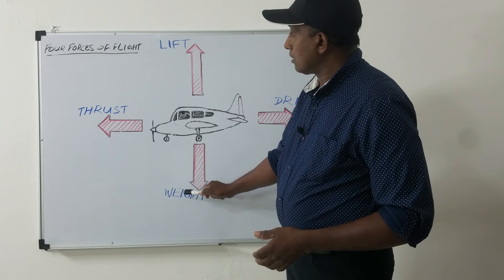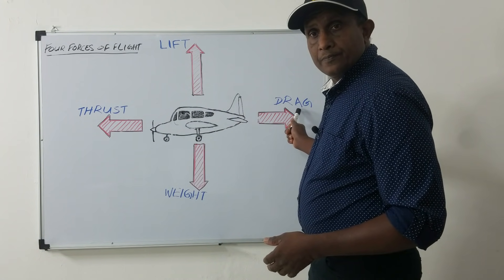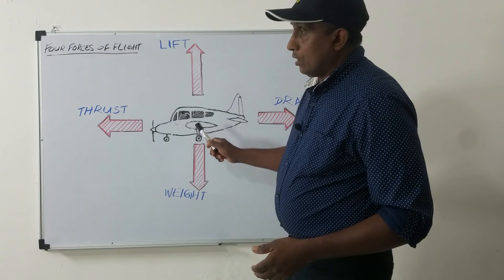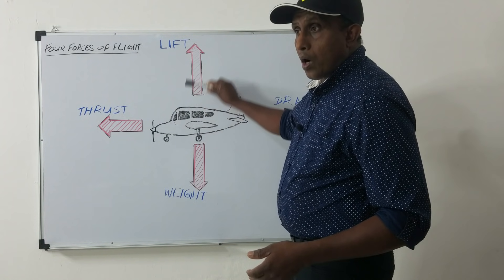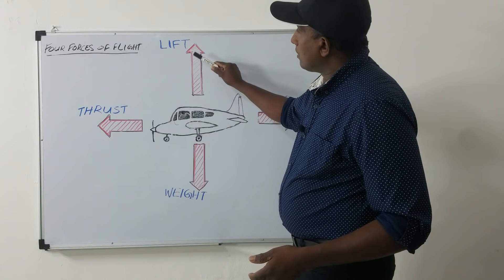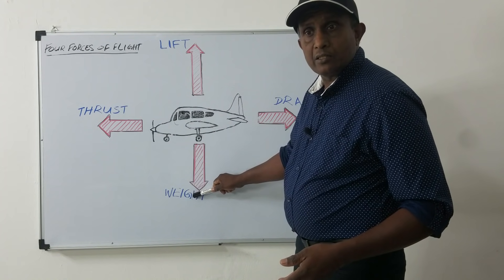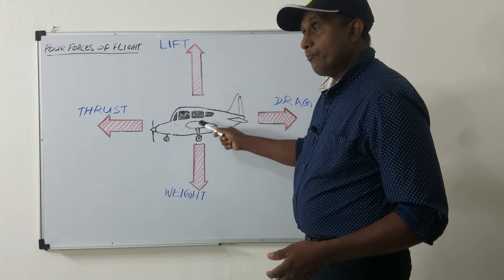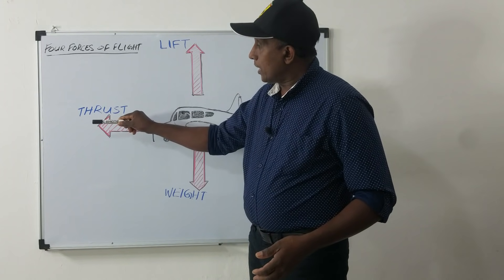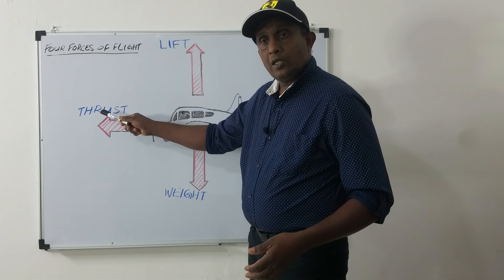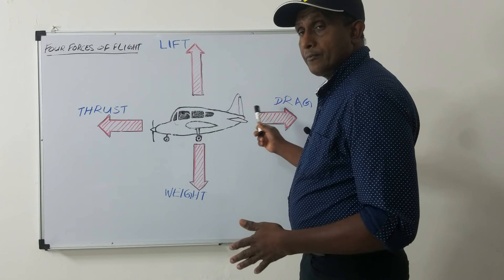Now you know the four forces acting on an airplane: lift, weight, thrust, and drag. If an airplane needs to go up, lift should be greater than weight. If an aircraft needs to move forward, thrust should be greater than drag.